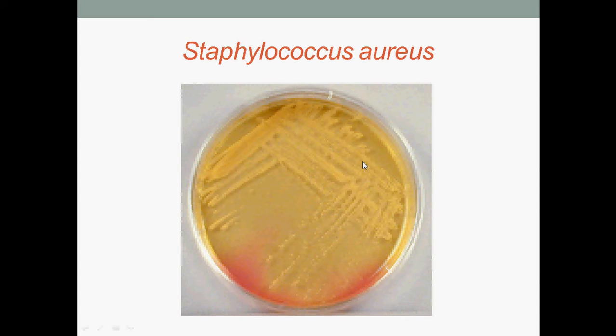Here we have Staphylococcus aureus growing on mannitol salt agar. You can see that the area around the colonies is rather yellow. Mannitol salt agar contains mannitol and uses phenol red as a pH indicator in the medium. At pH levels below 6.9, the media is yellow in colour. At neutral pH, the colour is red. While above pH 8.4, the colour of phenol red is pink. When mannitol is fermented by a bacteria, an acid is produced, resulting in the formation of a yellow area that surrounds the isolated colony.